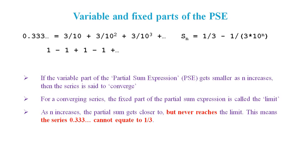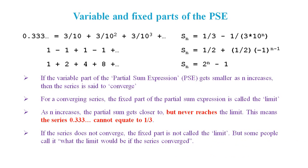Now let's take another look at 1 minus 1 plus 1 minus 1, the alternating series. Here we've got the sum to the nth term. As we saw before, it's 1/2 plus 1/2 times -1 to the power n-1. And another series, 1 plus 2 plus 4 plus 8 and so on. The sum to the nth term is given by the expression 2^n - 1. Each of these expressions for the sum to the nth term has a fixed part and a variable part. If the series does not converge, the fixed part is not called the limit, but some people do call it what the limit would be if the series converged.